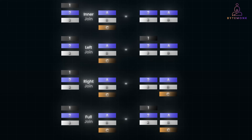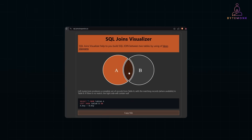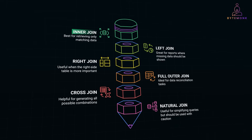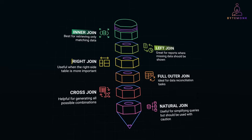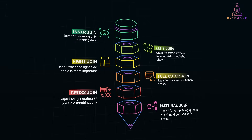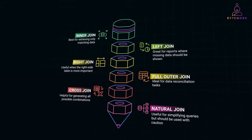For many people, Venn diagrams might still be the quicker way to understand joins at a glance, so here is a dynamic visualizer you can explore to see these concepts in action — you can find the link in the description. The SQL Joins Visualizer helps you build SQL joins between two tables using Venn diagrams; you can select an area and it creates a SQL query accordingly. However, if you need absolute clarity, it's often better to use tabular join diagrams, which are more precise and visually insightful. To summarize: inner join is best for retrieving only matching data; left join is great for reports where missing data should still be shown; right join is useful when the right side table is more important; full outer join is ideal for data reconciliation; cross join is helpful for generating all possible combinations; and natural join is useful for simplifying queries but should be used with caution.